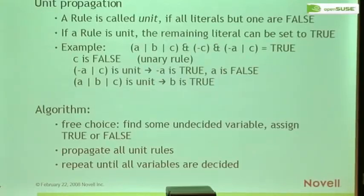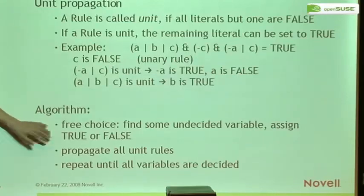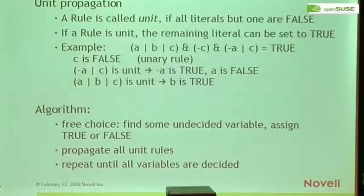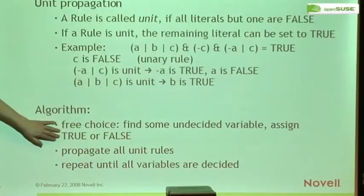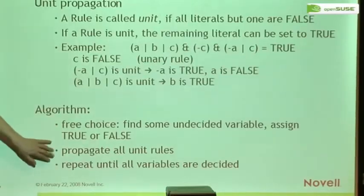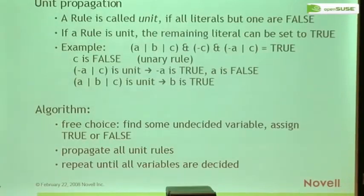You're probably thinking: picking a random variable won't work. But this is where you program the direction the solver should take — where you program that the solution must be minimal, must change the minimum number of packages, or must update as well as possible. This is where you encode your goals. What's forced by unit propagation is what's required by the RPM dependencies.